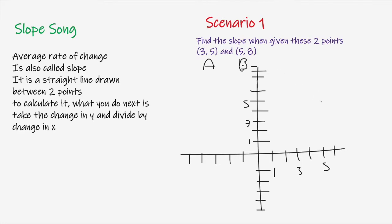Let's demonstrate this by graphing. First, let's graph point A, which is (3, 5) — find where 3 is on the x-axis and where 5 is on the y-axis and plot that point. Then point B is (5, 8) — find 5 on the x-axis and 8 on the y-axis. Now we draw the straight line between these two points, which represents the slope between points A and B.